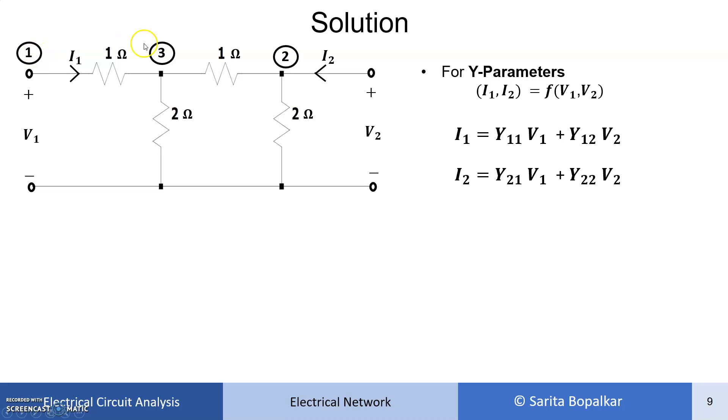This voltage is V2, we will mark it as 2, and the remaining one will mark as V3 or the third node. Now at each node, we have to apply KCL, Kirchhoff current law. For this one, I1 is equal to voltage at this point V1, minus voltage at this point V3, divided by 1. So current I1 equals V1 minus V3.